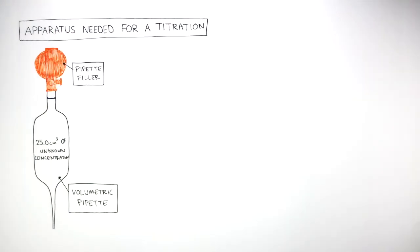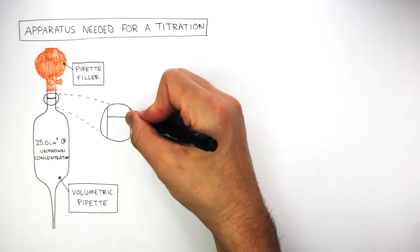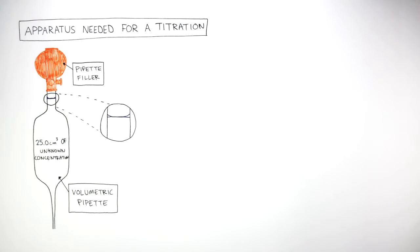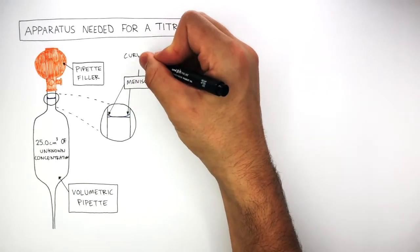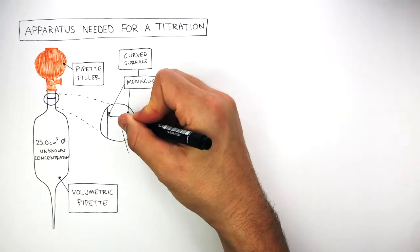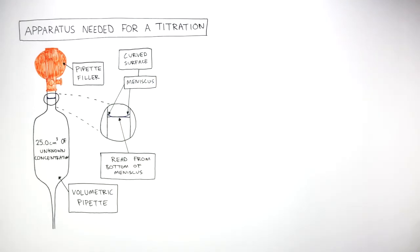This line represents the meniscus, and when we zoom in on the volumetric pipette we can see the meniscus is a curved surface where it curves above the line. To make sure the volume of the unknown concentration is accurate, we read from the bottom of the meniscus where it is the most flat.